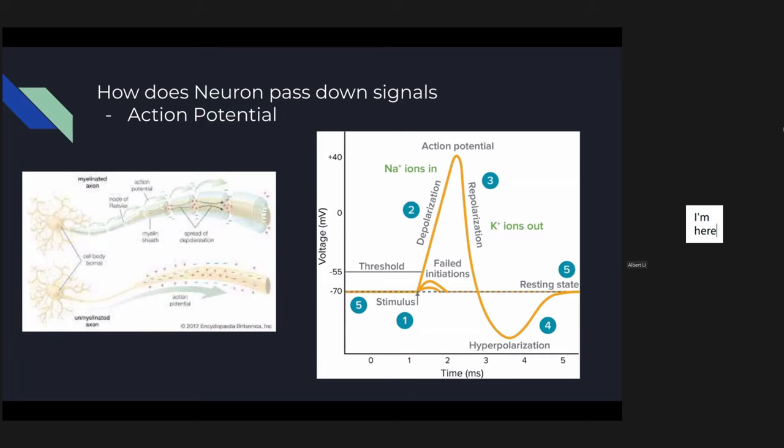The resting membrane potential is roughly negative 70 millivolts. A change in channels across the membrane will open to change that potential, as you can see in this graph. Initially there is a process called the graded potential — these are little minor stimulations that slightly nudge the voltage difference across the membrane upward. Once those graded potentials reach a certain threshold of negative 55 millivolts, the action potential will begin.